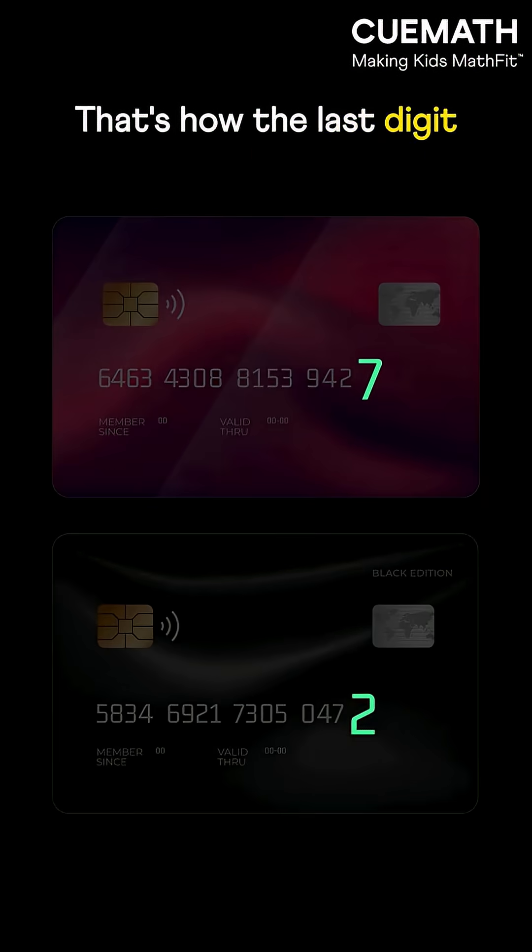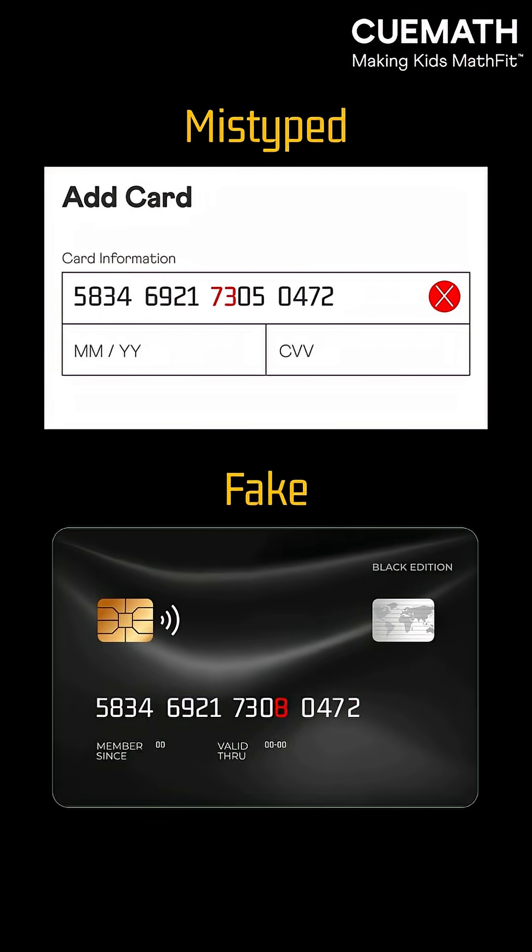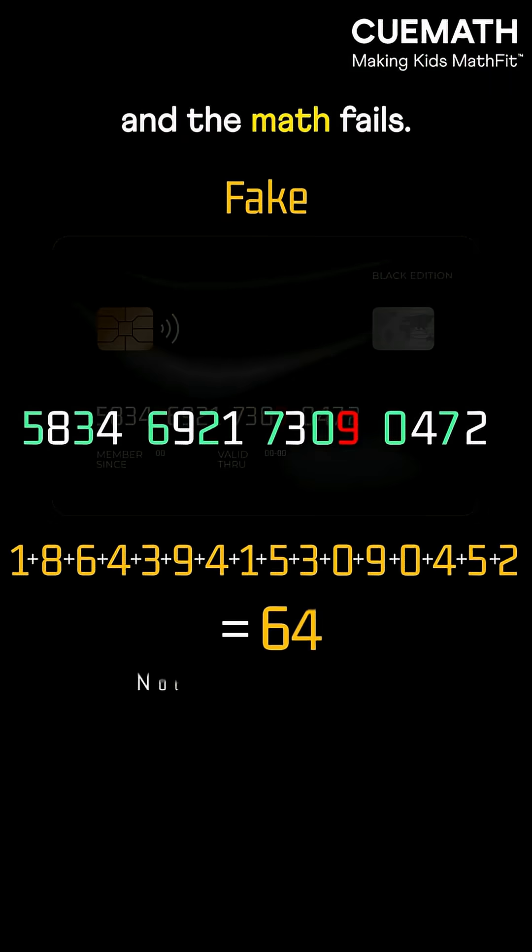That's how the last digit or check digit of most credit cards is calculated. It ensures a number isn't mistyped or fake. Change one digit, and the math fails.